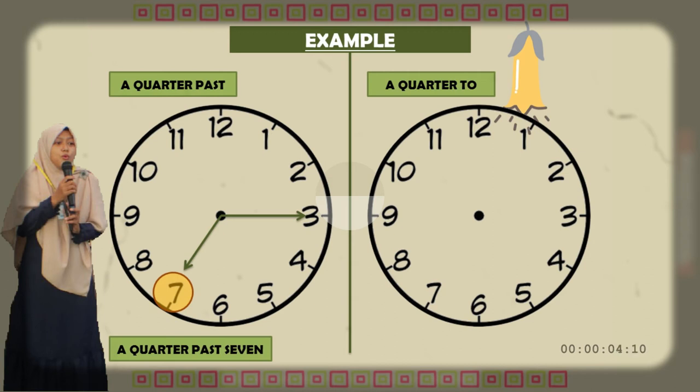Okay, next: a quarter to. When do we use a quarter to? Look at this example. Itu menunjukkan jam 5 kurang seperempat. How do we tell the time? Bagaimana kita menyebutkan waktunya?